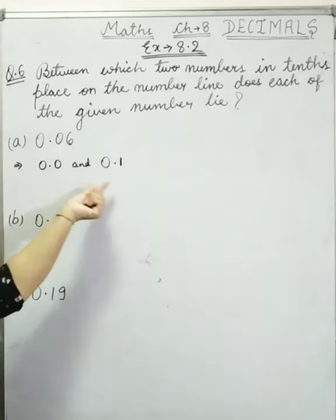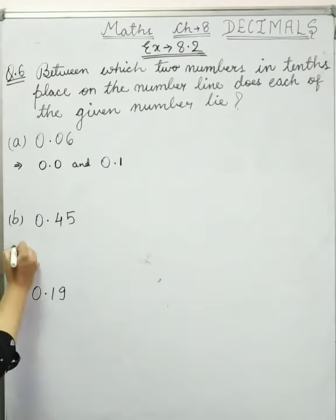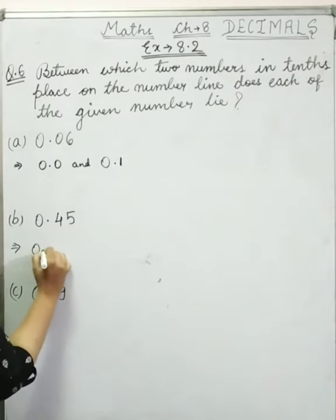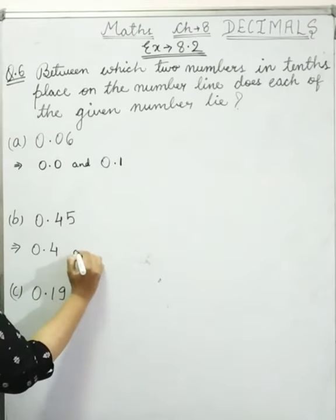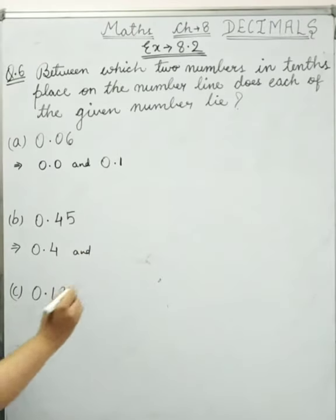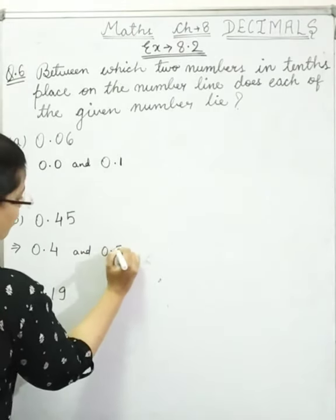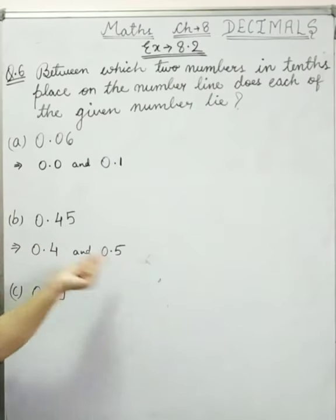Now next is b, and we compare to 4. So this is 0.4, and the next is 0.5. Now 0.45 lies between 0.4 and 0.5.